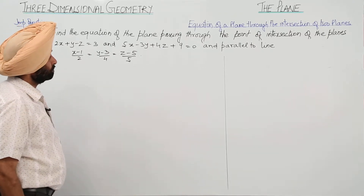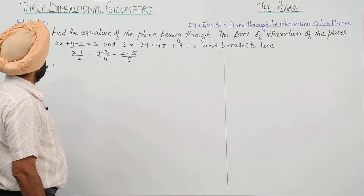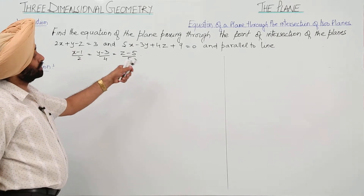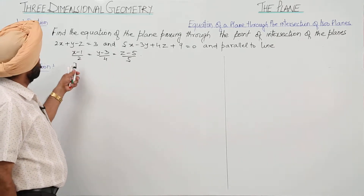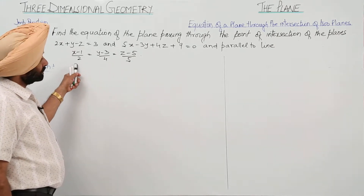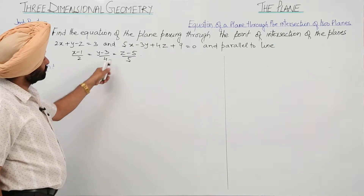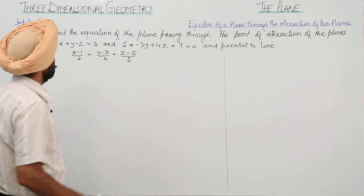Now, to find the equation of a plane passing through the point of intersection of the planes. The equations of the planes are given, and the plane is parallel to the line: (x - 1)/2 = (y - 3)/4 = (z - 5)/5.